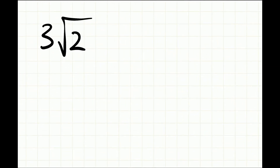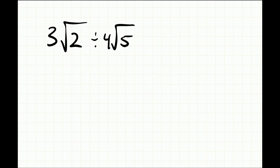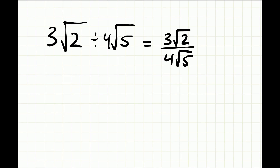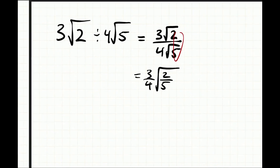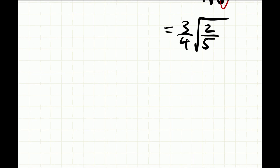Let's look at the example 3√2 divided by 4√5. This is quite similar — rather than multiplying the terms, we're just going to divide. It's helpful to start off by writing this as a fraction: 3√2 on the numerator and 4√5 on the denominator. Here we'd see if we can simplify anything: 3 divided by 4 can't simplify, and 2 divided by 5 can't simplify either, so we're left with (3/4)√(2/5).